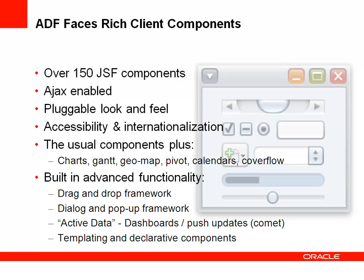Beyond the components, the framework offers a lot of capabilities for building user interfaces. One key aspect is that the look and feel of the application is pluggable — you can develop skins to change the overall look and feel. The components also support accessibility and internationalization. Beyond regular components like buttons, checkboxes, and tables, we offer unique components such as charts, Gantt, geographical map, pivot table, calendars, carousels, and more. The framework also offers built-in functionality such as a drag-and-drop framework, dialog and pop-up window framework, active data support for push to the client, as well as templating and declarative components to enhance reusability.